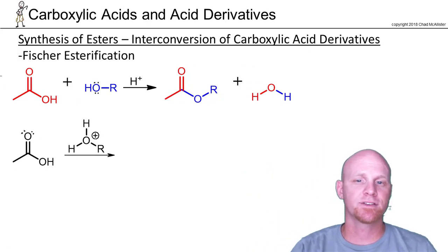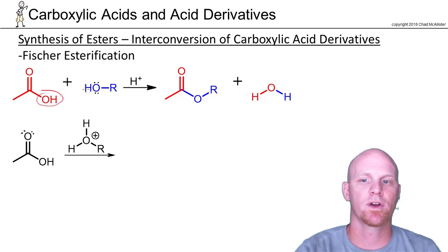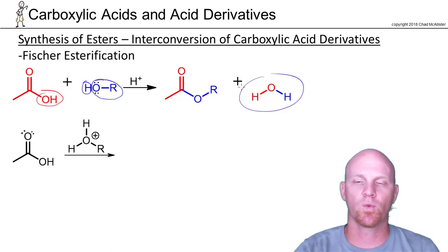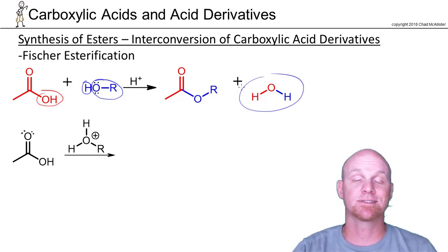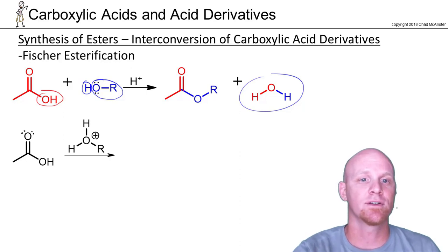Looking at the mechanism for the Fischer esterification, we can see that we're going to lose the OH and replace it with the OR of the alcohol. The H from the OH will end up being part of the water molecule we form in the end. This is one of those acid-catalyzed mechanisms — it's six steps, which is a lot, with lots of proton transfers involved. But let's hammer it out; it is an important one.